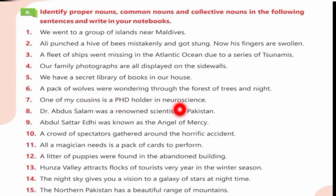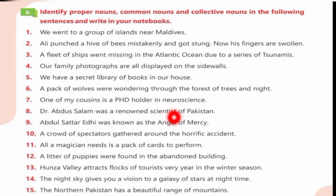One of my cousins is a Ph.D. holder in neuroscience. 'Neuroscience' is a proper noun and 'cousin' is a common noun. Dr. Abdus Salam was a renowned scientist of Pakistan. 'Dr. Abdus Salam' is a proper noun, 'Pakistan' is a proper noun, and 'scientist' is a common noun.